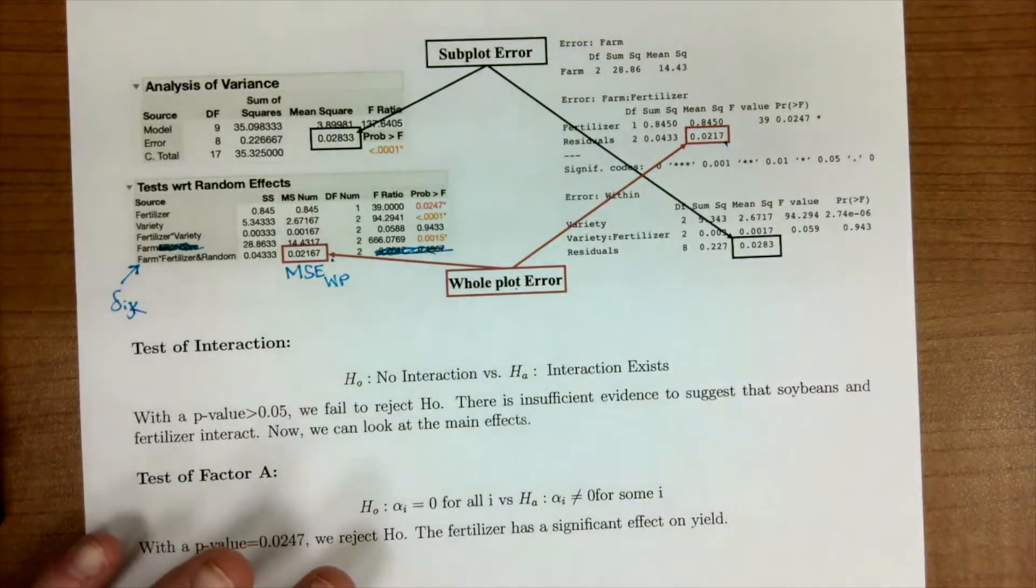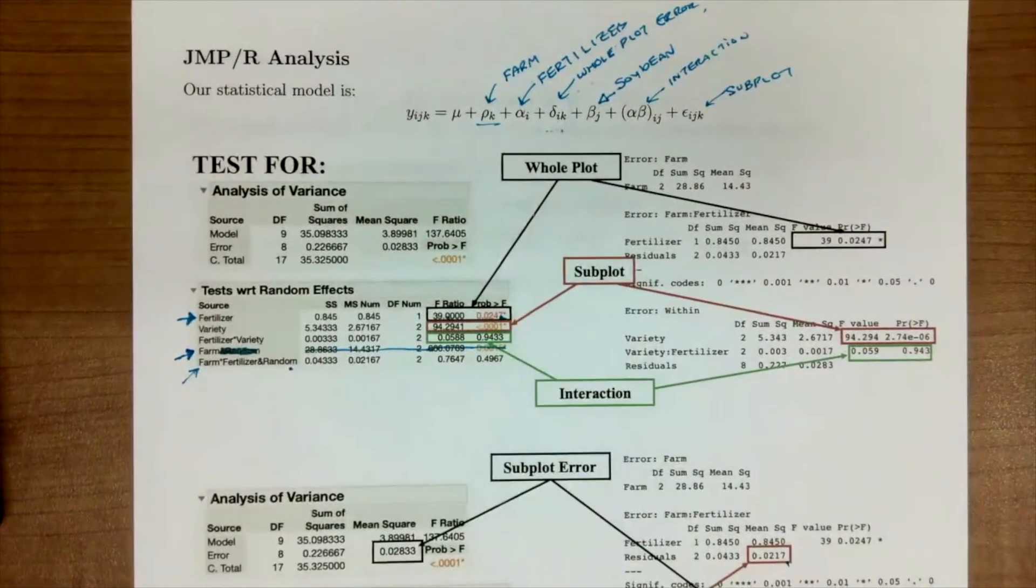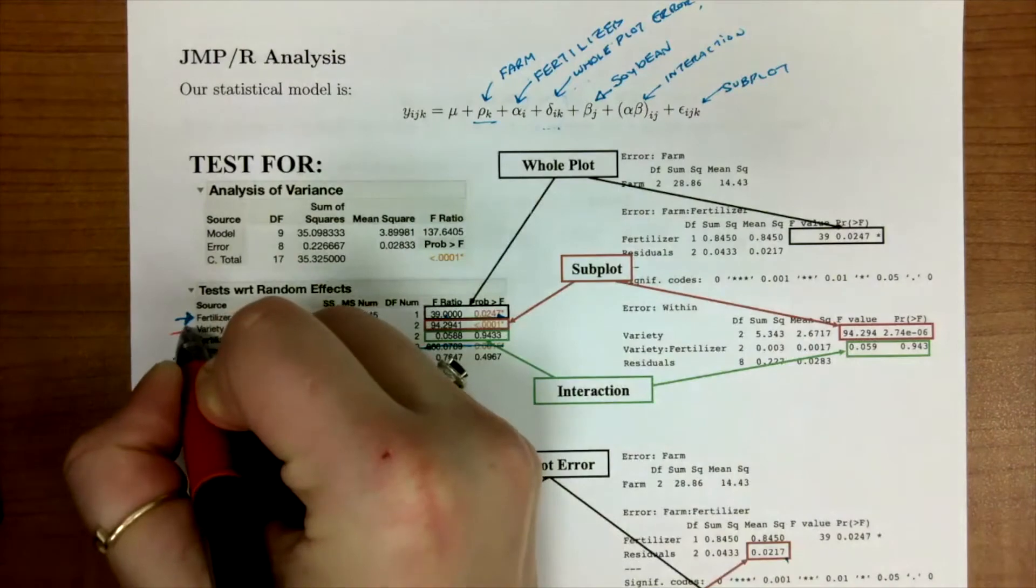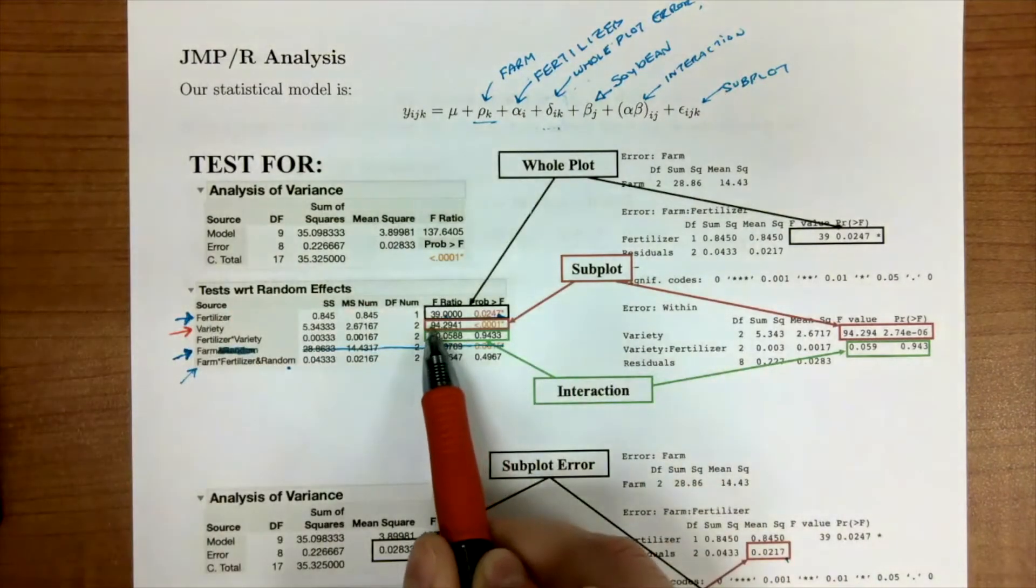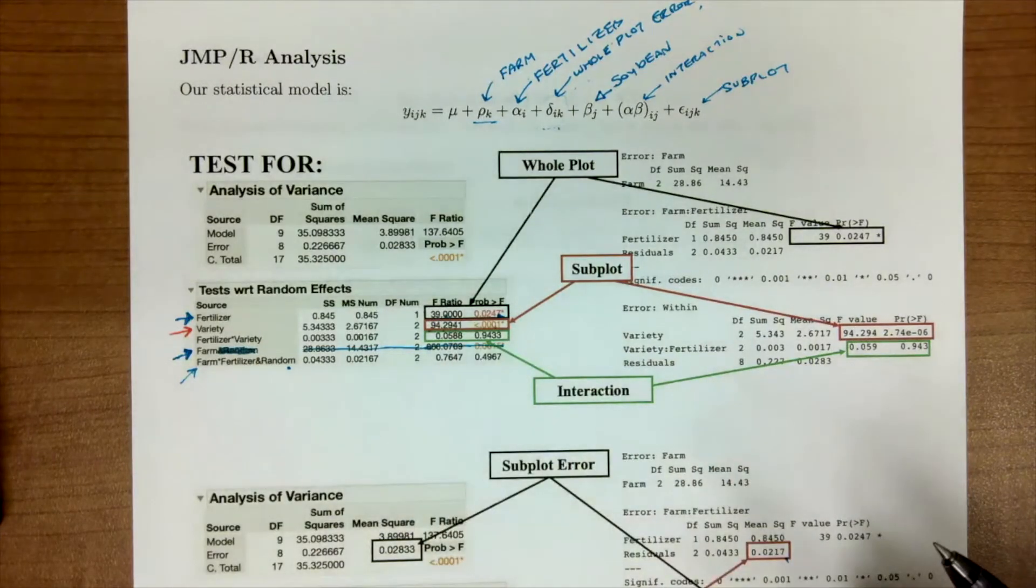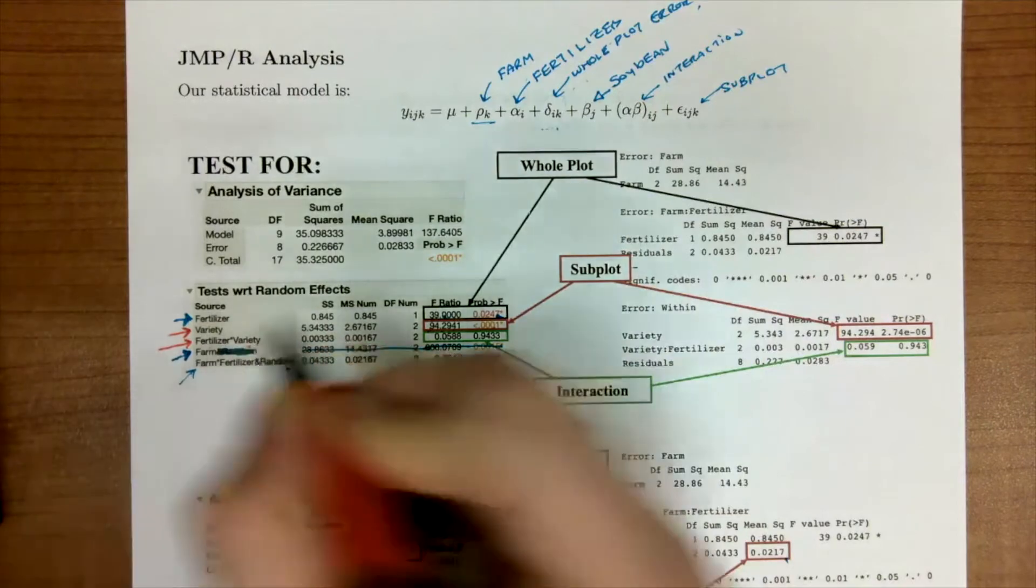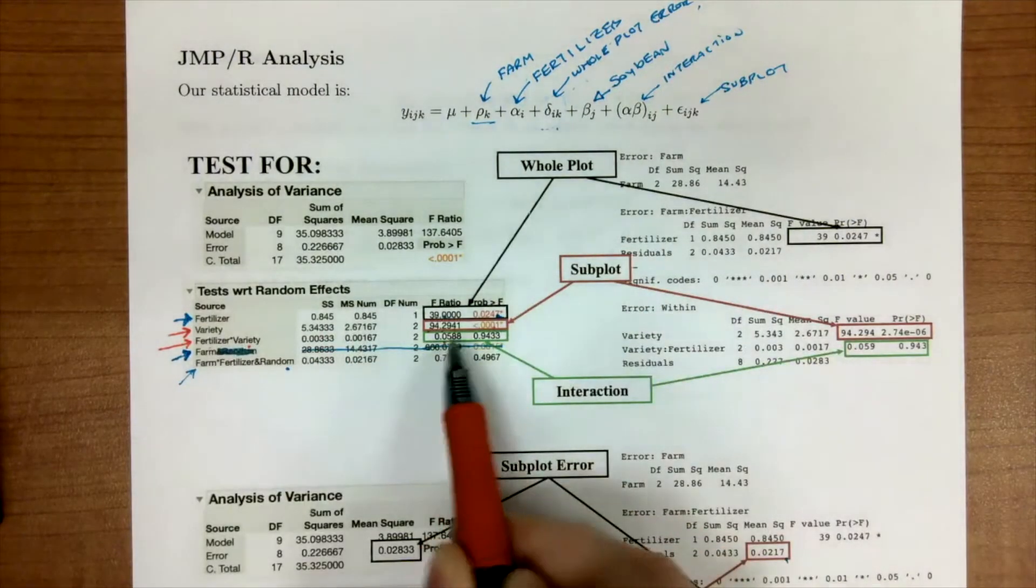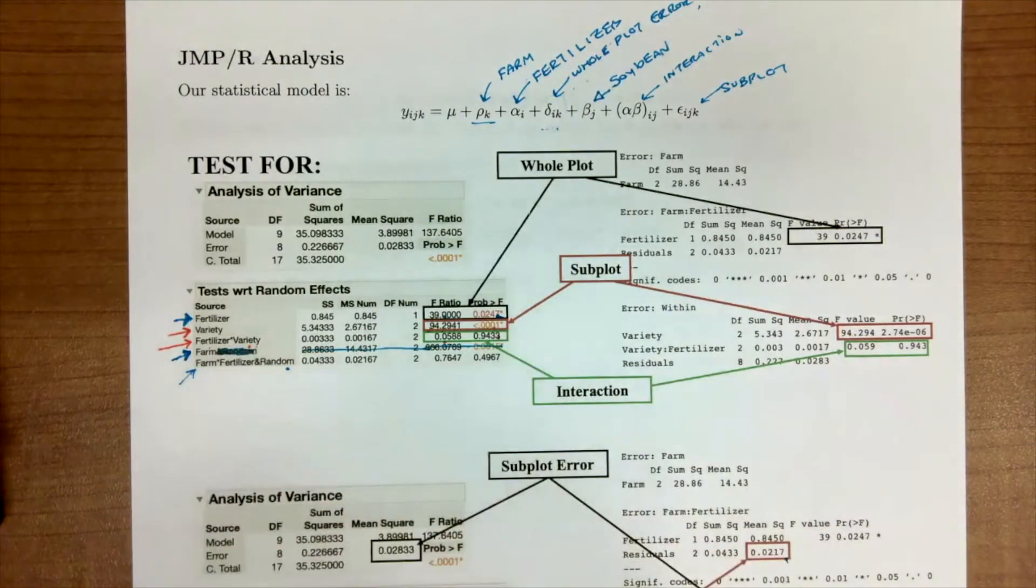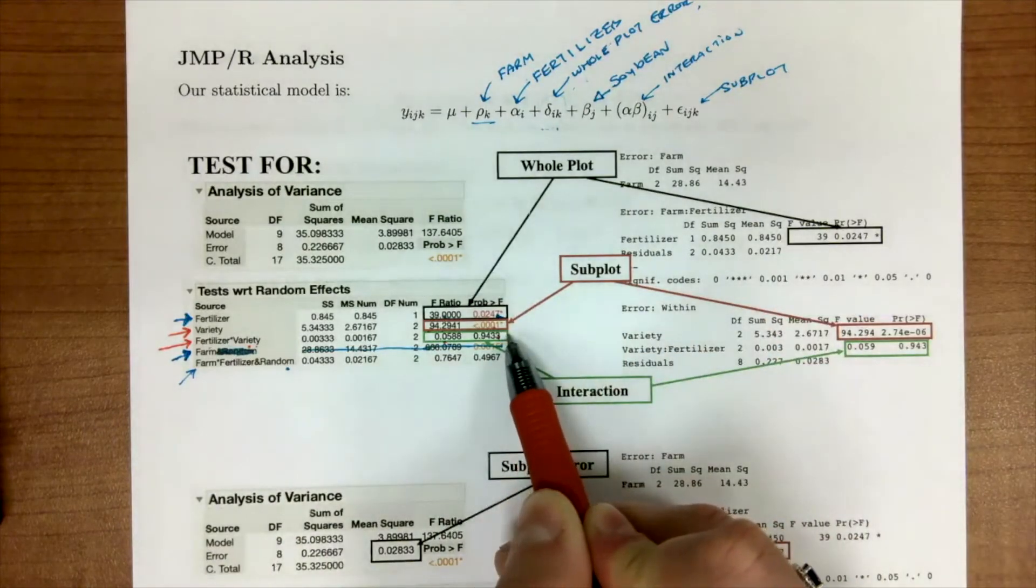The next term we want to identify, if we go back to our model, is our soybeans, which is here in variety. We will be looking at this F ratio which is right here and this p-value when we go to test in a moment. Then we want to also find the interaction, which is right here: fertilizer cross variety. We will be looking at the F and the p-value for that. In our case, fertilizer and variety were our fixed effects, so we would want to look at the interaction term first and decide if we can move to fertilizer or variety next.